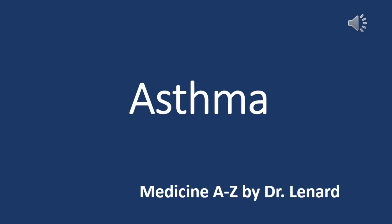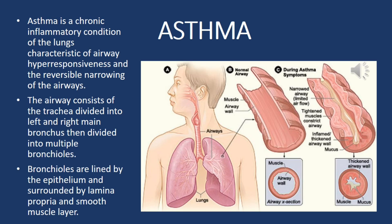Today we are going to talk about asthma from A to Z. Asthma is a chronic inflammatory condition of the lungs characterized by airway hyperresponsiveness and the reversible narrowing of the airways.